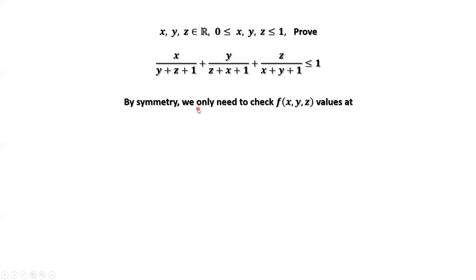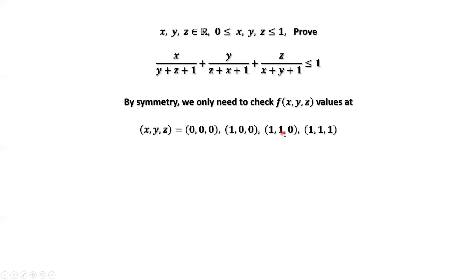By symmetry, we only need to check f values at these points: all values are zero; only one value is one and the other two are zero. For example, the combinations (1, 0, 0), (0, 1, 0), and (0, 0, 1).